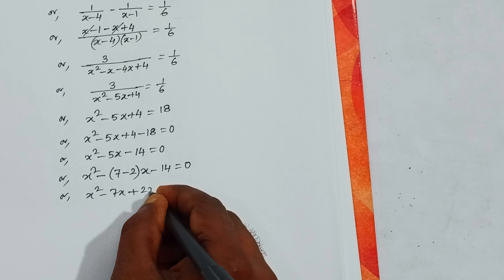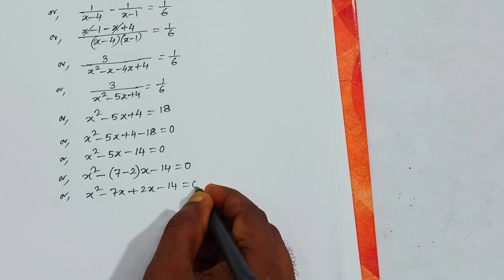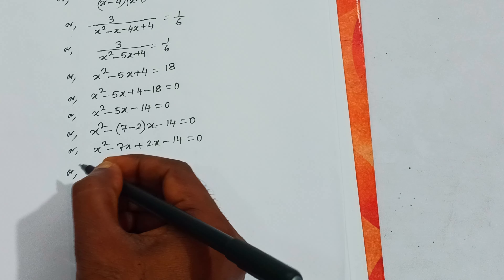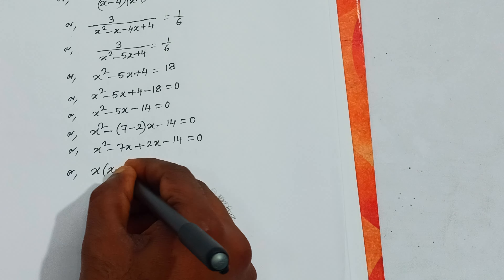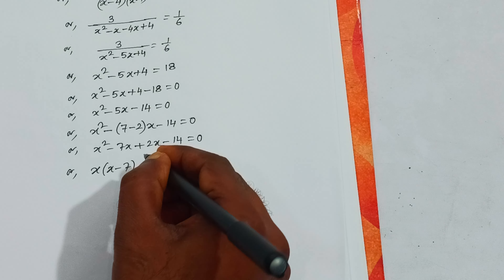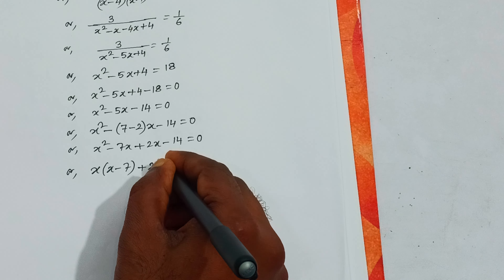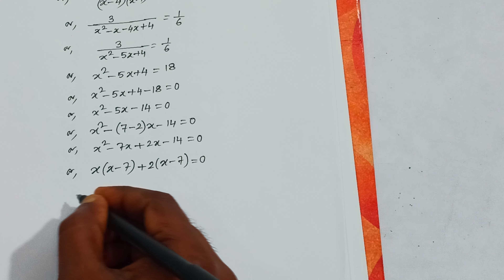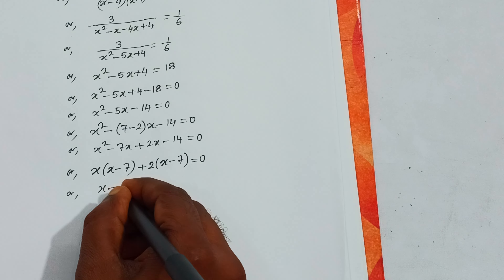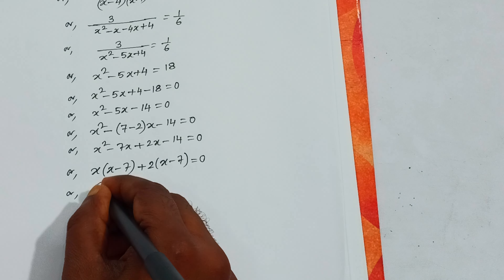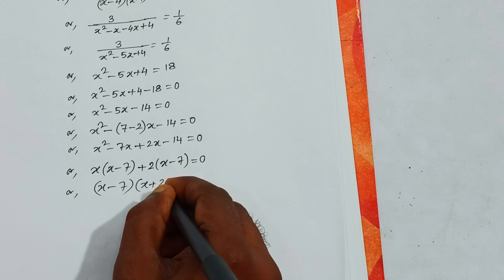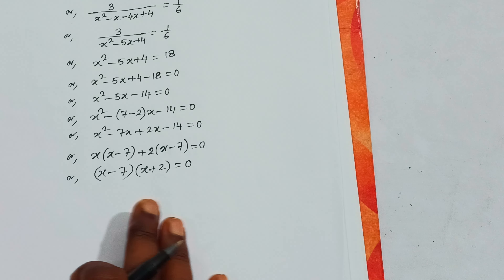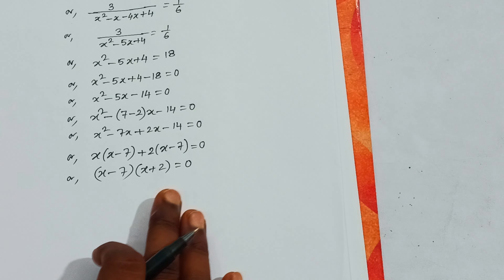Now cross-multiply using LCM of (x-4)(x-1). Dividing by (x-4) leaves (x-1), and dividing by (x-1) leaves (x-4). With the minus sign: minus x, minus, plus 4, giving us the numerator expression.